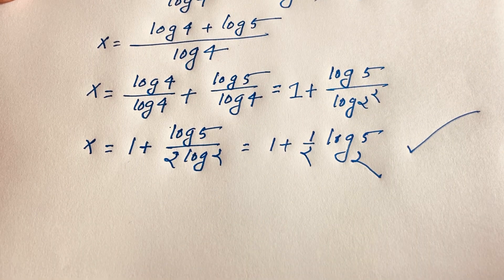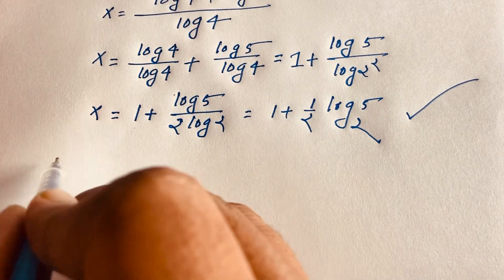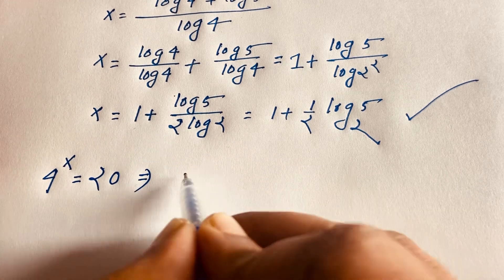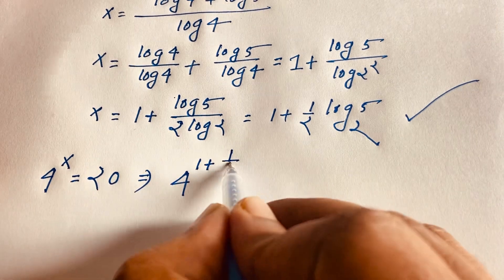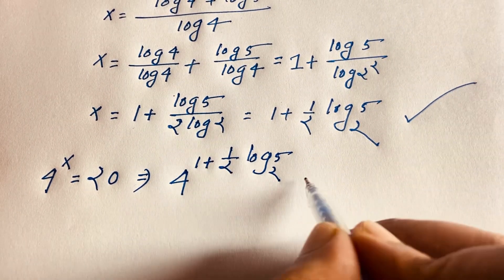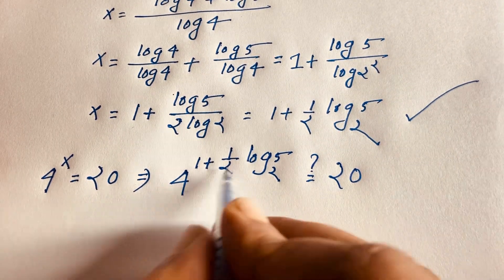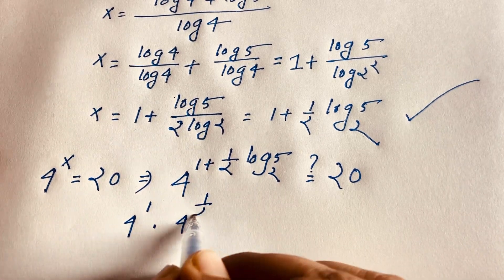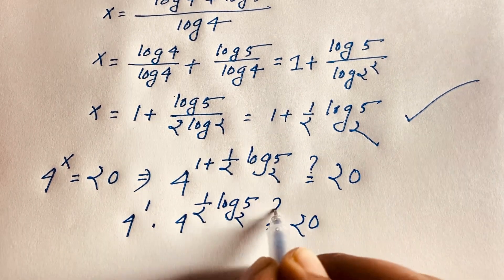Let's check our answer by verifying that 4 to the power x equals 20. Our x equals 1 plus one-half log base 2 of 5. So 4 to the power x equals 4 to the power of 1 times 4 to the power of one-half log base 2 of 5 is equal to 20.